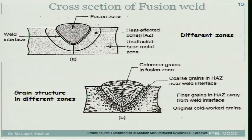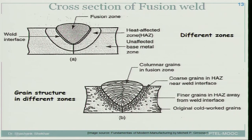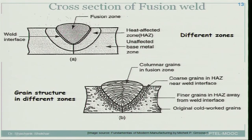If you look at the fusion zone microstructure, in most cases you would see columnar grains because heat moves in the normal direction to the interface, and therefore growth takes place in a columnar direction normal to that interface. In the heat affected zone, at some distance from the interface, recrystallization has taken place but grains have not had time to grow, so you see very fine grains. Closer to the interface, recrystallization took place and then grain growth occurred, so grain size becomes coarser. Very far from the fusion zone is the base metal region with the original cold-worked structure.